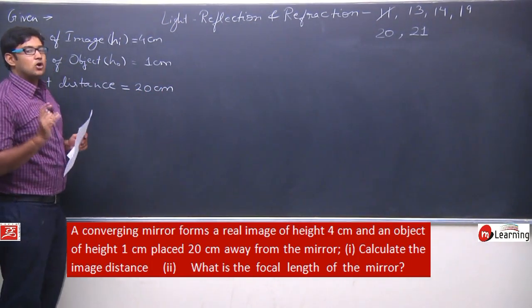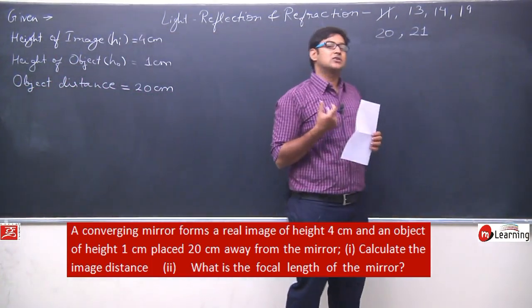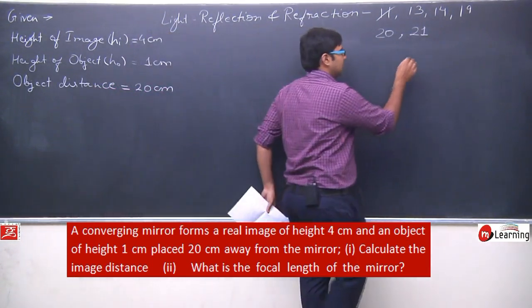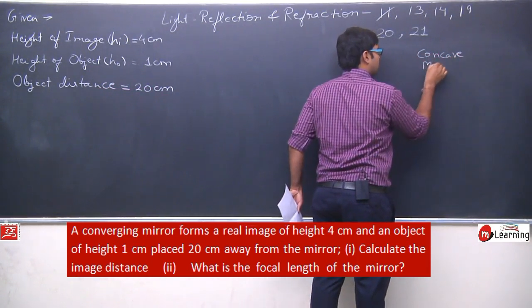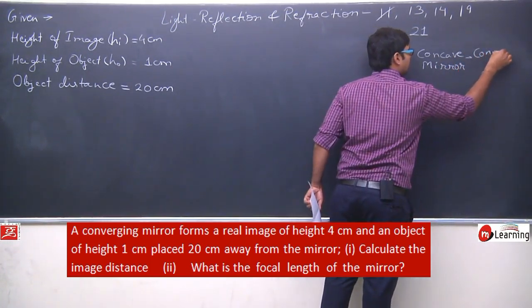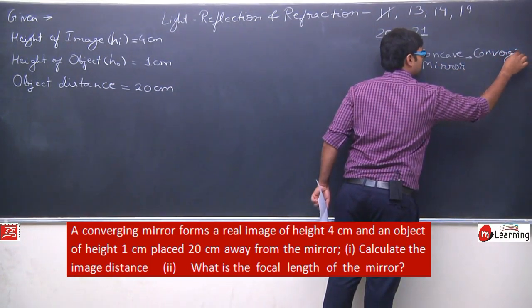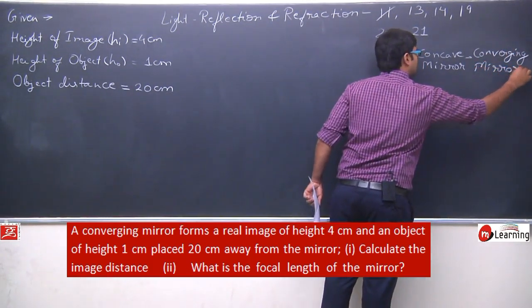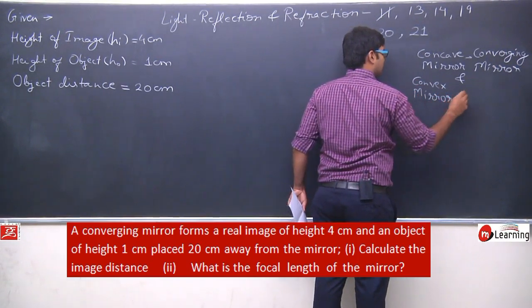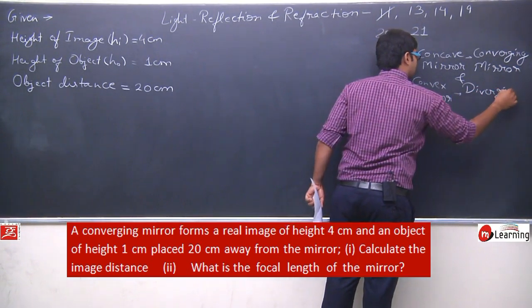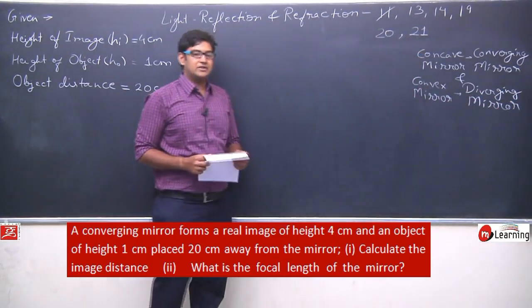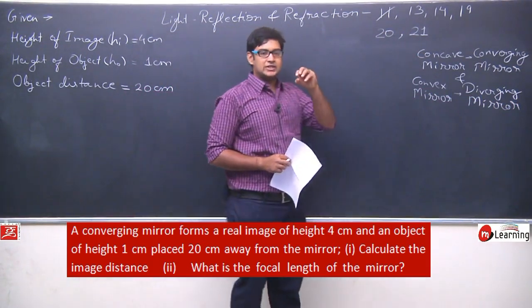It is given that the mirror is a converging mirror. A converging mirror is a concave mirror, and a convex mirror is a diverging mirror. A concave mirror converges light — it focuses a beam of light to a single point. A diverging mirror distributes the light outward.